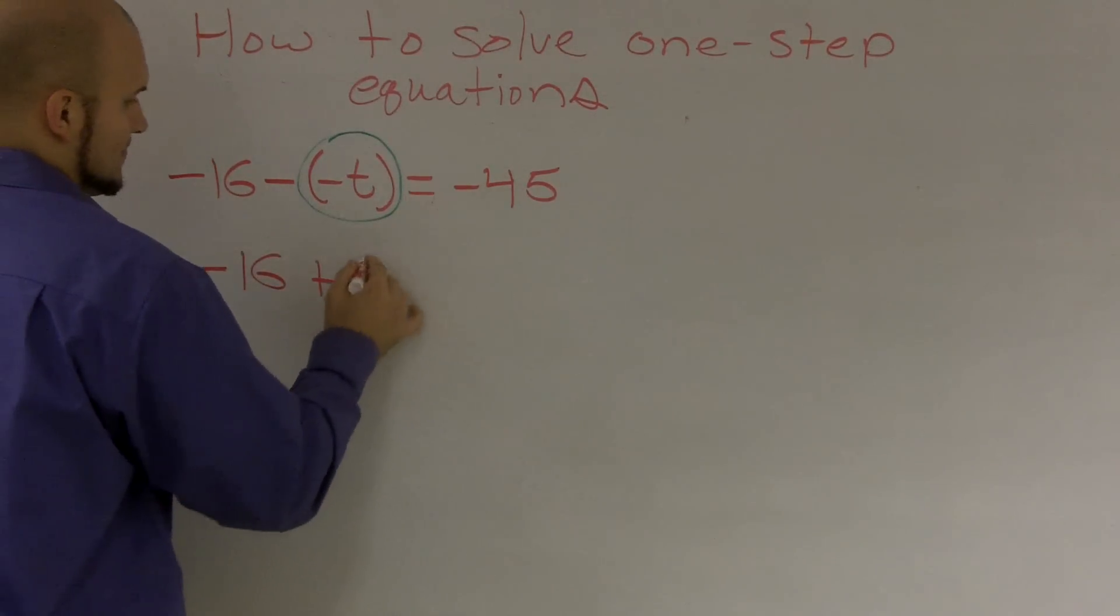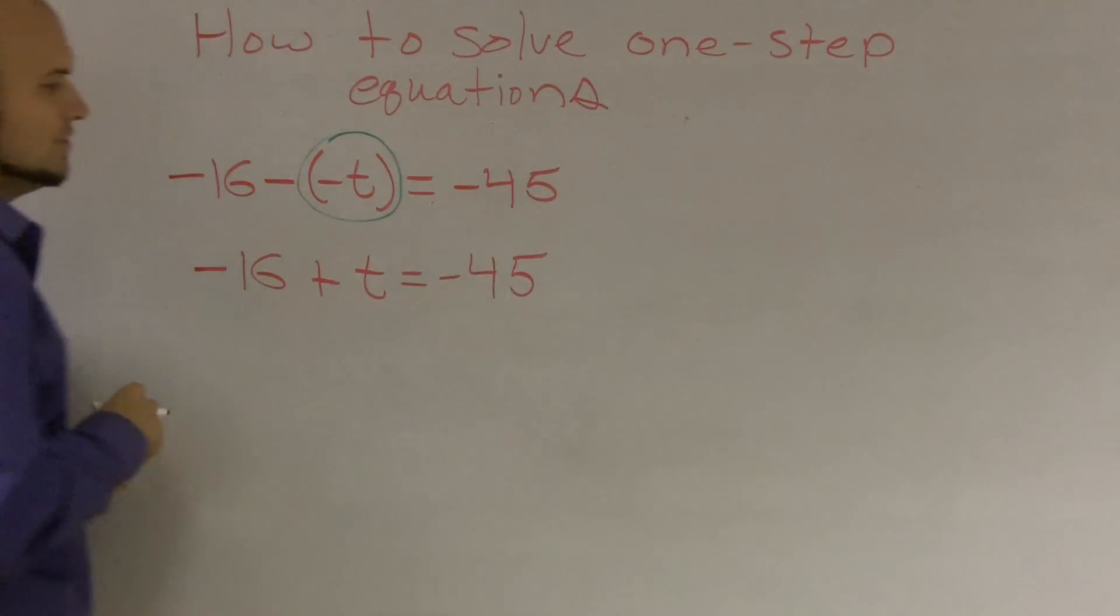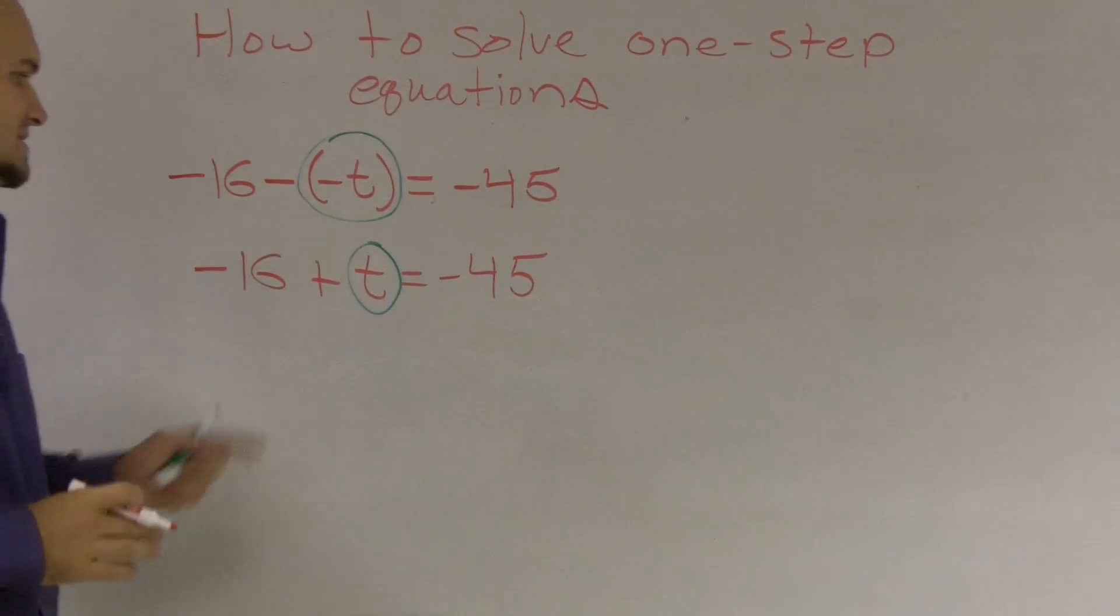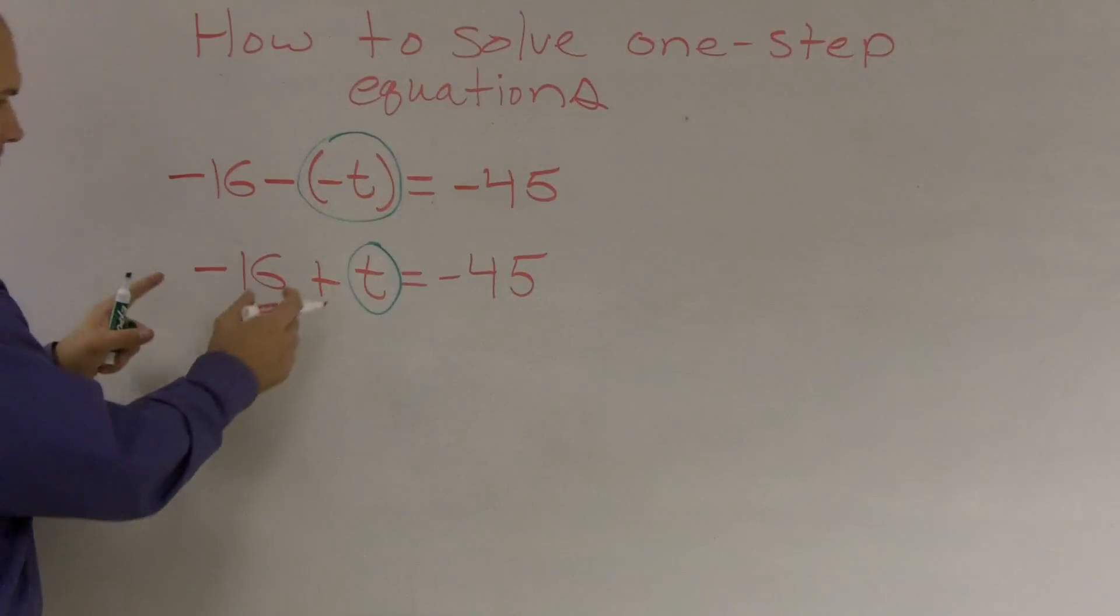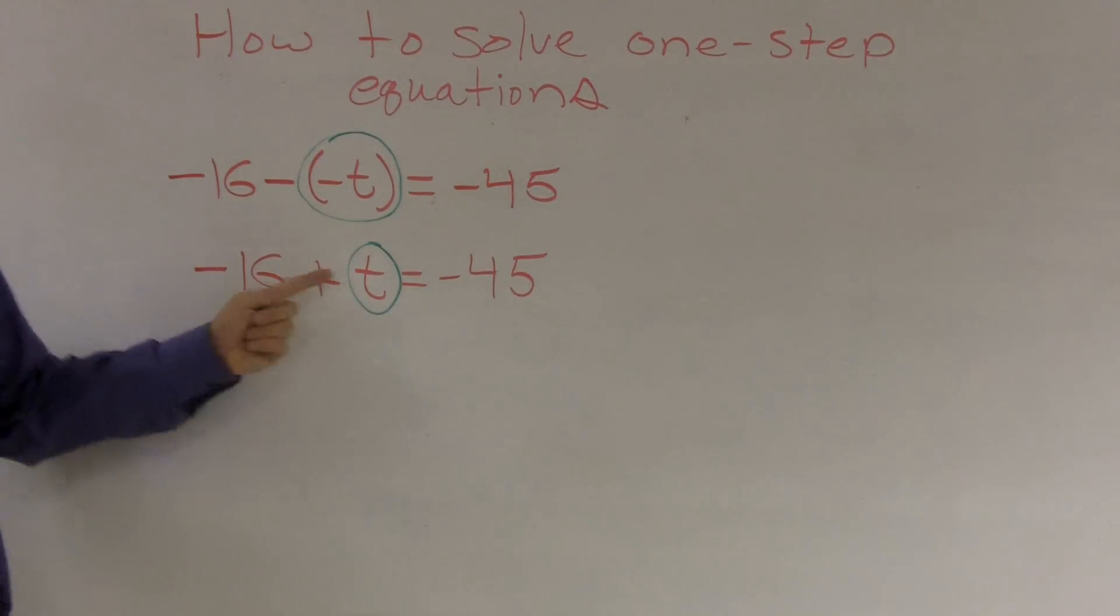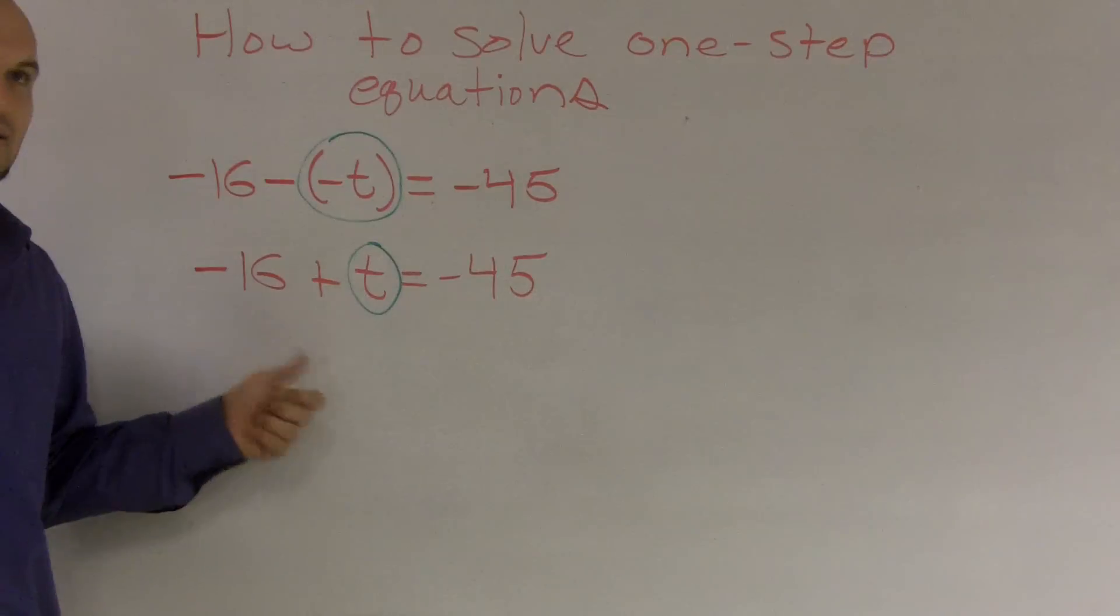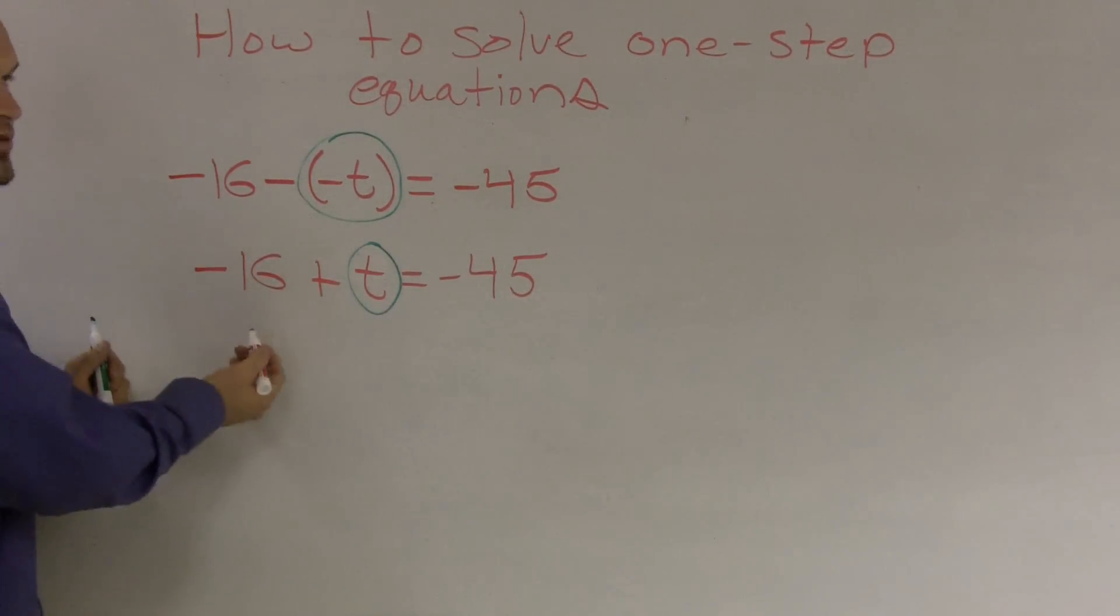So I'm going to rewrite this in this format. Therefore, it will make my problem go by a little bit easier. So now I look at this and say, what is actually happening to my t? If I look at this, you can say you're adding a negative 16. Well, adding a negative is the same thing as subtracting, correct? If you add a negative, that's the same thing as subtracting 16.